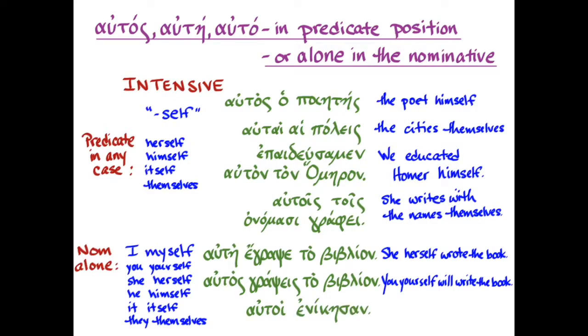And let's do one more example. Autoi and nikesan. Again, it's a form of autos, ate, auta, all by itself in the nominative. This time it's plural, and we can say, they themselves won.